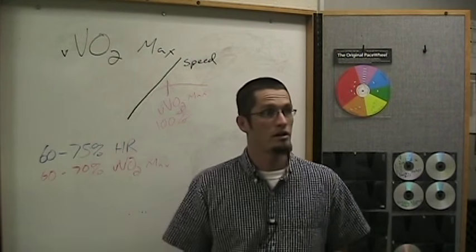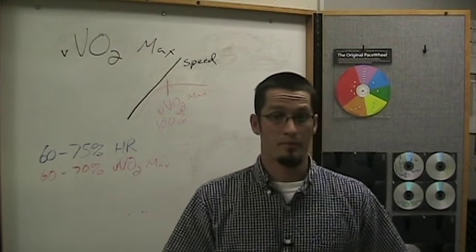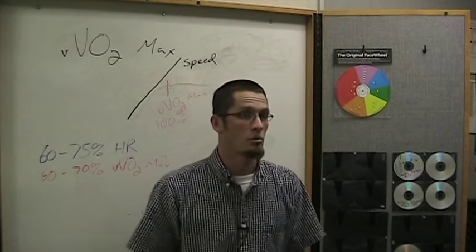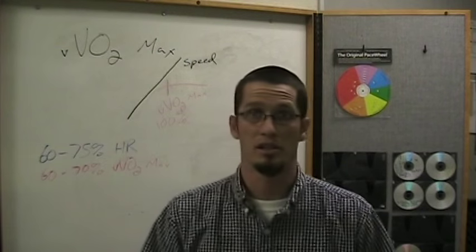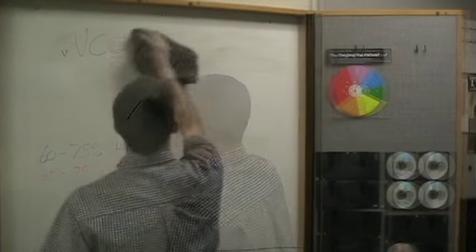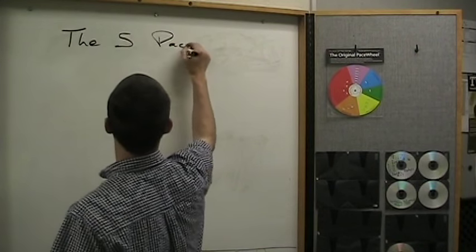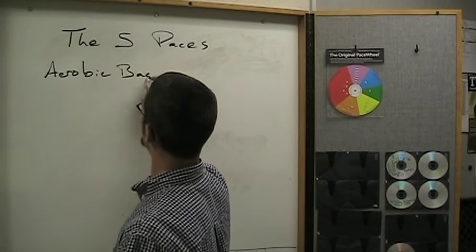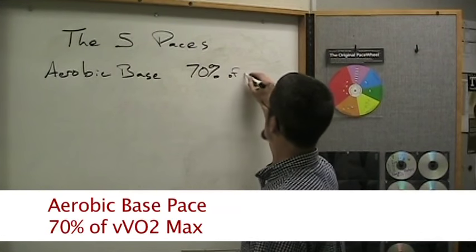So how do we know what our velocity at VO2 max is? We're going to go through the five running paces and give you an example of one runner and his velocity at VO2 max. The five training paces for distance running, in order of intensity: the first one is aerobic base training pace, which I use at 70% of velocity at VO2 max.